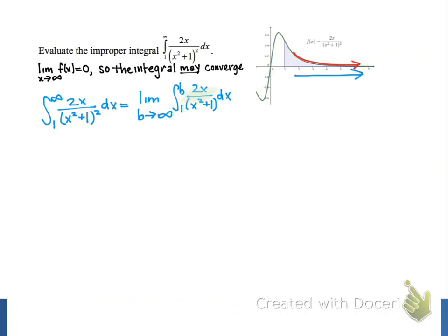Our next step is to find an antiderivative for our integrand. We'll need to use u-substitution to help us with this, so we'll do that over here on the right. We'll let u be equal to x squared plus 1, because we see its derivative, 2x, in the numerator of the integrand.